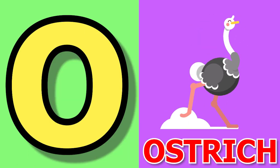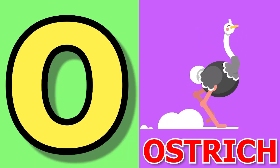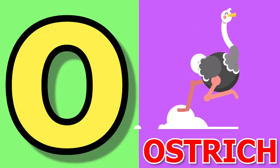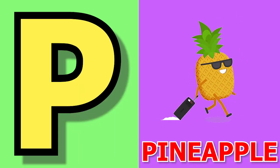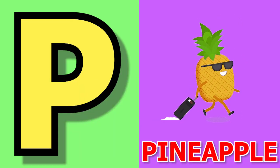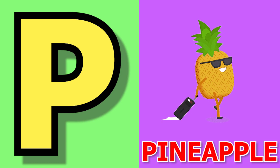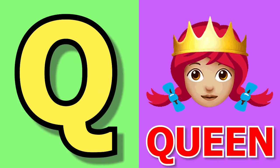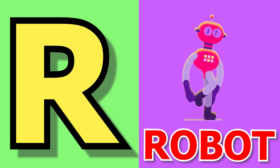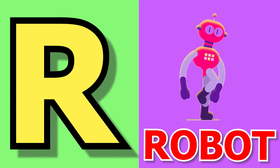O for ostrich, ostrich means ostrich. P for pineapple, pineapple means ananas. Q for queen, queen means runny.